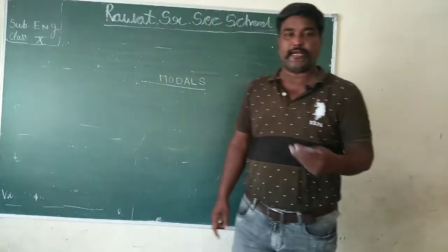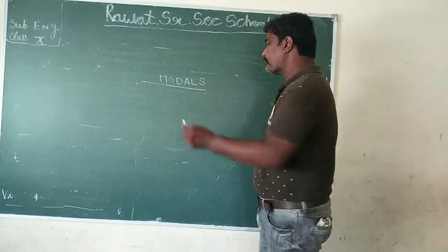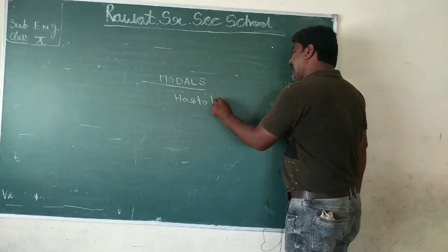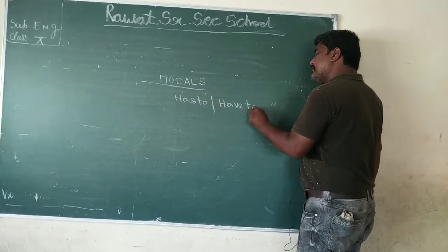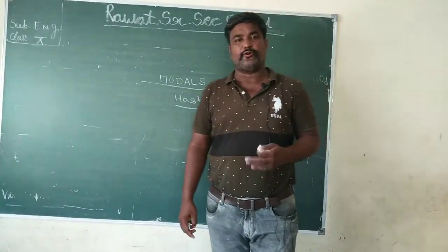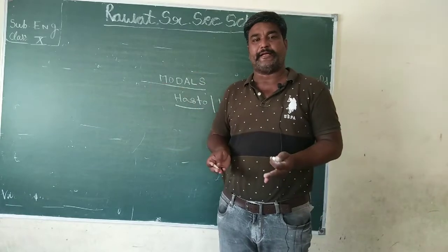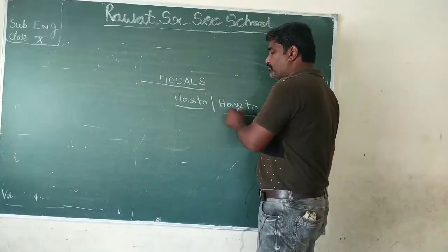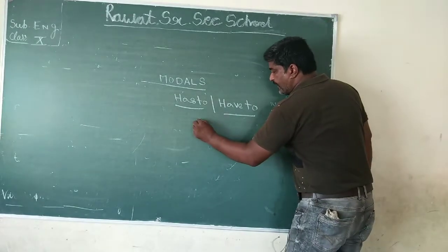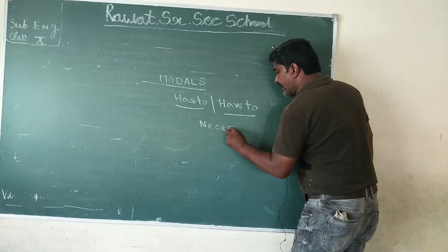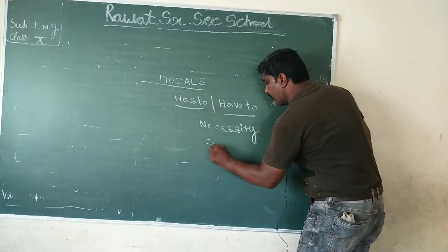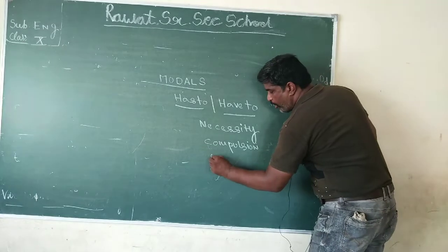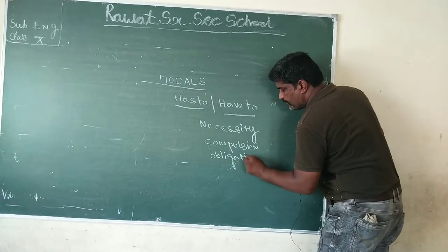Now we are moving to the next topic — the use of 'has to' and 'have to'. Several times in your daily routine you say: 'Mujhe yeh kaam karna hai' or 'Mujhe yeh kaam karna padhta hai' — that is the use of 'has to' or 'have to'. It expresses compulsion and obligation — work that you are required to do.